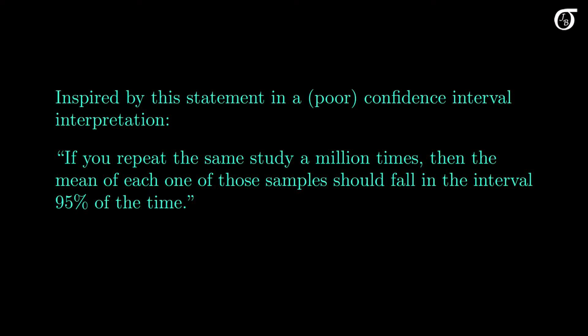This was inspired by this poor interpretation of a confidence interval that I heard many years ago on a video, and I've heard related misconceptions more than a few times since. The person calculated a confidence interval, and then in an effort to explain what it meant, said that if you repeat the same study a million times, then the sample means should fall within that first interval 95% of the time.